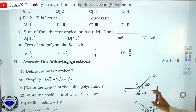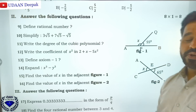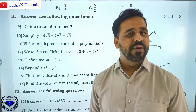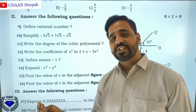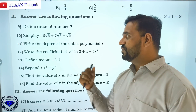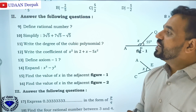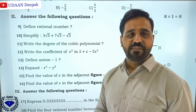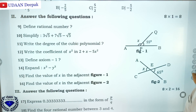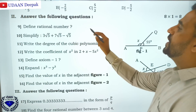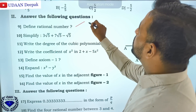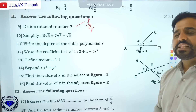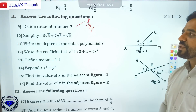Now going to the one-mark questions. Define rational number: rational numbers are numbers which can be expressed in the form of P by Q. Those numbers which you can express in the form P/Q are called rational numbers.